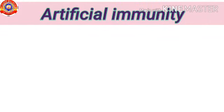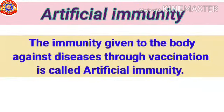What do you mean by artificial immunity? It is the immunity given to the body against diseases through vaccinations. That means vaccinations prevent diseases. Do you know, many years ago there was mass death due to a smallpox epidemic in our country?